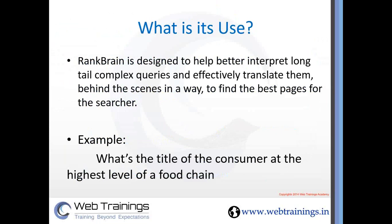In conclusion, the RankBrain algorithm is an artificial intelligence algorithm that interprets very complex queries which are not common — they may be related to science, technology, or anything — and it will interpret them in the back end and provide results dynamically based on the query. Hope you liked the video! Please share your comments, like the video if you enjoyed this presentation, and share it with your friends. Also, please don't forget to subscribe.